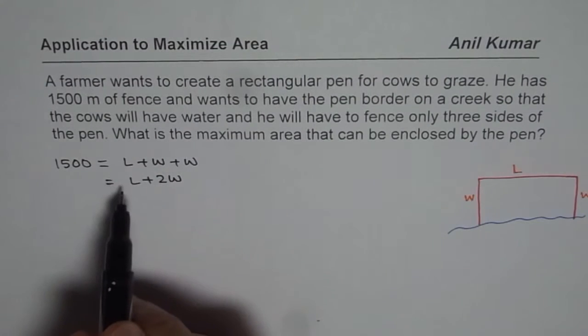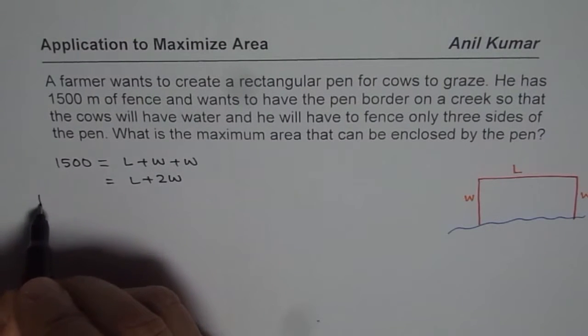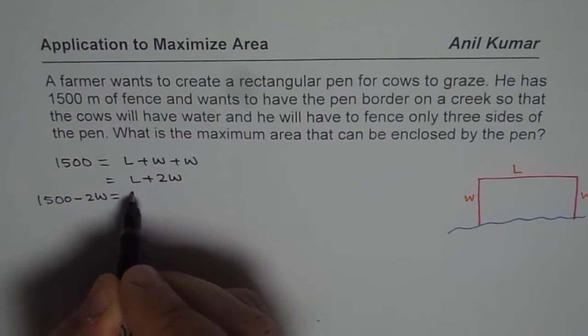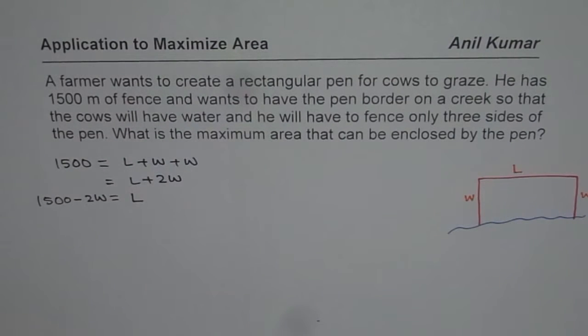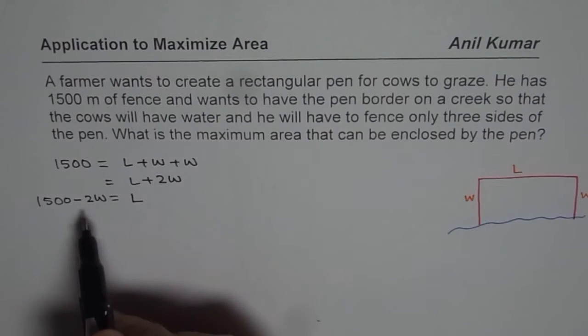Now using this equation, we can write one variable in terms of another. So we can write this equation as 1,500 minus 2W equals to L. So that is the whole idea. Get one equation and define your variables. Write that equation, one variable in terms of other.